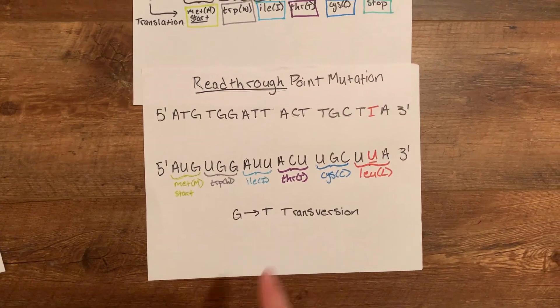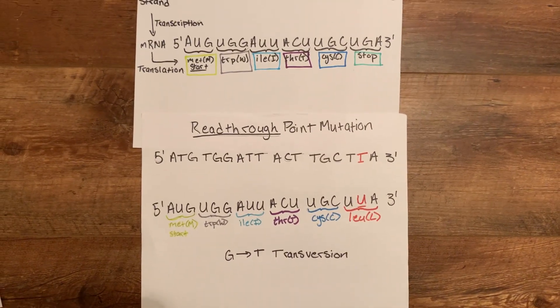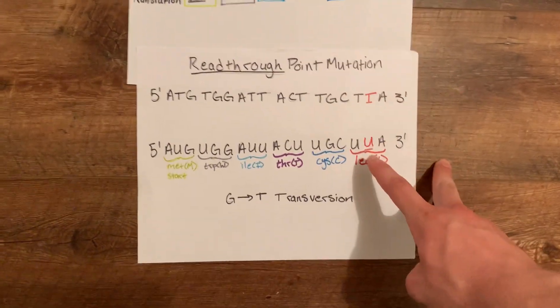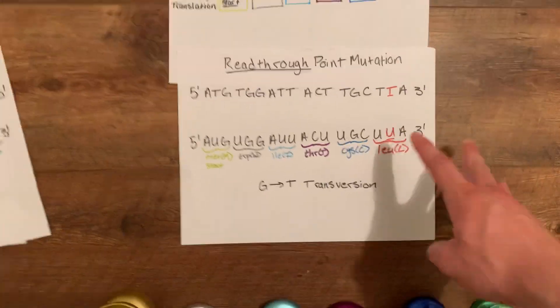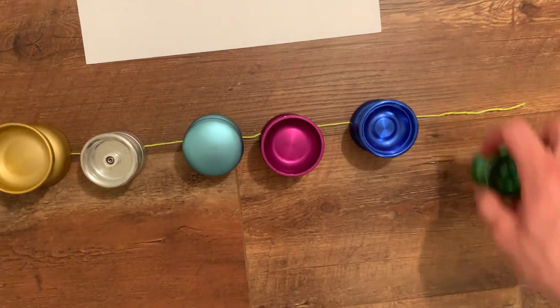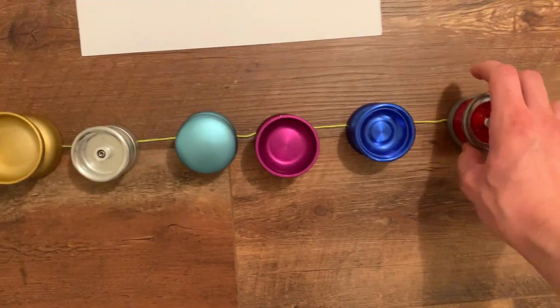This is a G to T transversion, but with the read-through it changes a stop codon to a working amino acid. So the stop codon is not a stop anymore and is now this L.